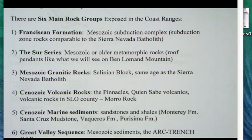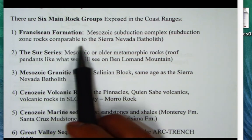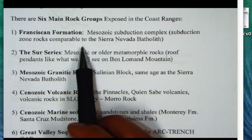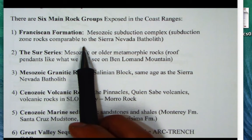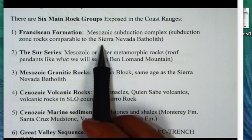The Franciscan is a Mesozoic subduction zone complex — the subduction zone counterpart to the Sierra Nevada. In the Coast Ranges you had the accretionary wedge, the mélange subduction zone complex, and farther inland the Sierra Nevada magmatic arc. They're coeval — you need one to have the other.